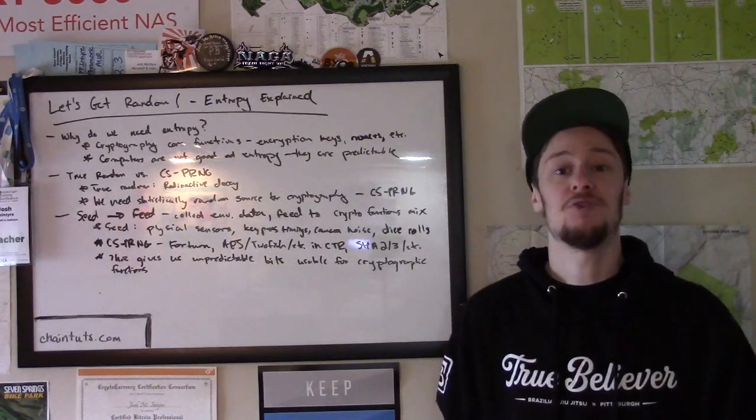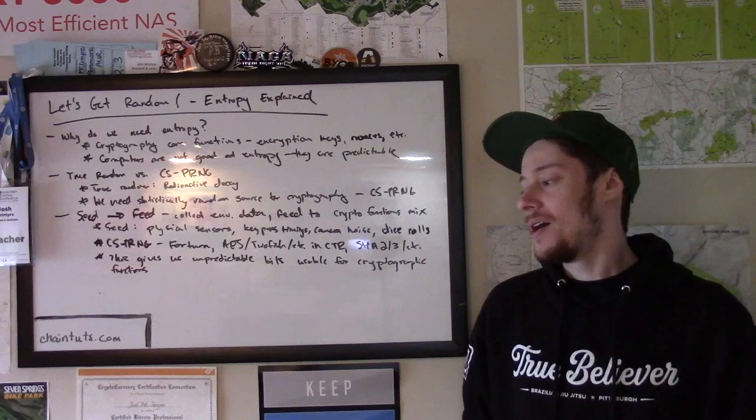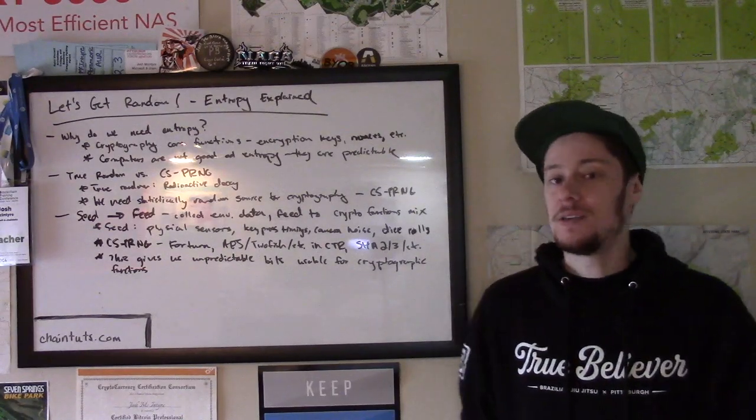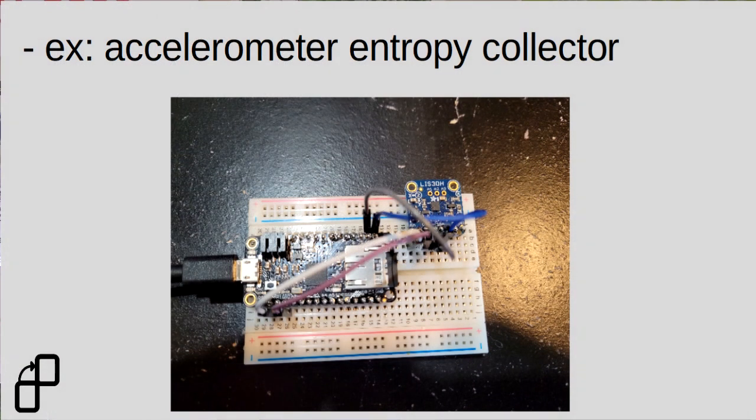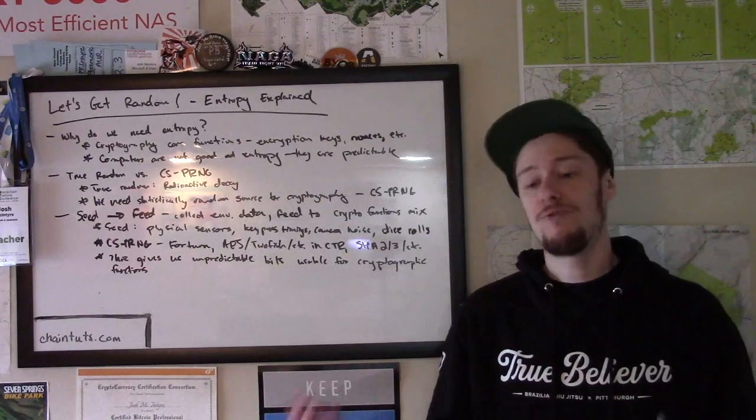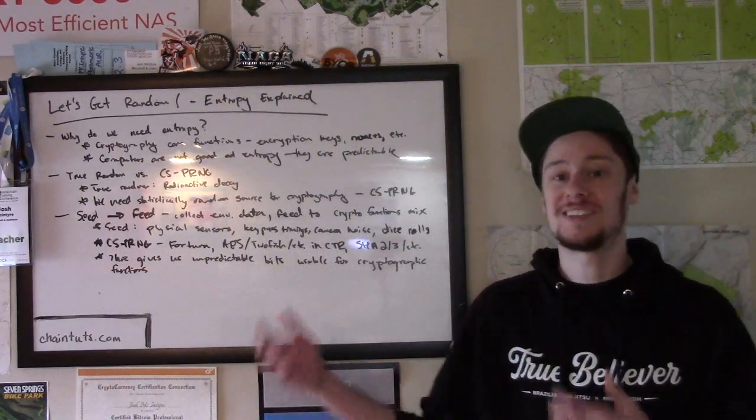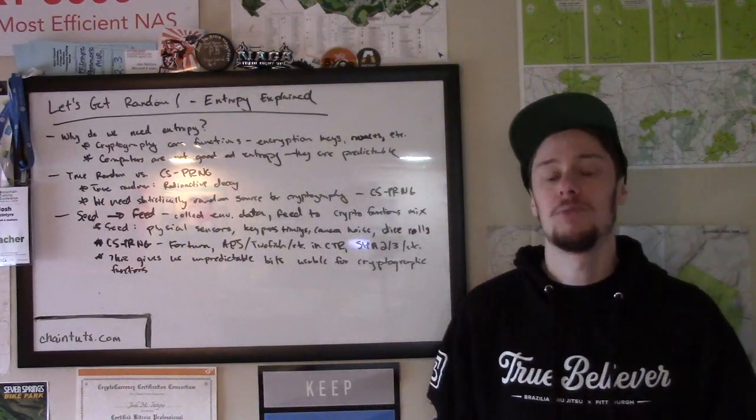Another example is an entropy collector that uses an accelerometer sensor. This is something where it detects all the movement, takes a bunch of samples, and feeds it to a cryptographic function to give you random outputs. Now these are not necessarily production-ready examples, but they show this concept of how we can use all sorts of different things that are fairly unpredictable sources to seed our pseudo-random number generators.